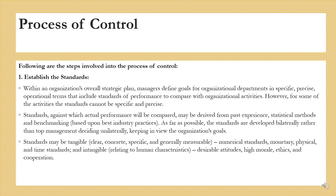The process of control. There are certain steps which we have to follow in order to exercise control. The first is establishing the standards. We would be establishing what kind of standards are there against which we would be comparing our actual performance. Within an organization's overall strategic plan, managers define goals for organizational departments in specific, precise operational terms that include standards of performance. Standards against which actual performance will be compared may be derived from past experience, statistical methods, benchmarking, or based upon best industry practices.